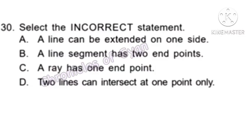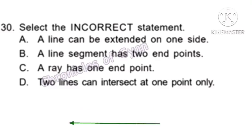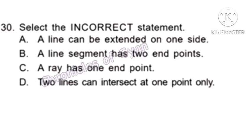Question 30. Select the incorrect statement. Option B: A line segment has 2 endpoints — correct. Option C: A ray has 1 endpoint — correct. Option D: Two lines can intersect at one point only — correct. Option A: A line can be extended on one side — this is incorrect, as a line has no endpoints so it can be extended on both sides. Hence option A is the answer.